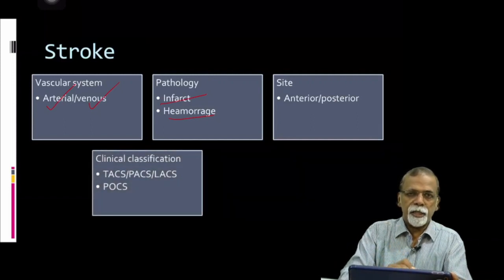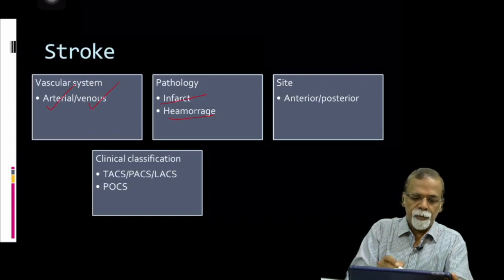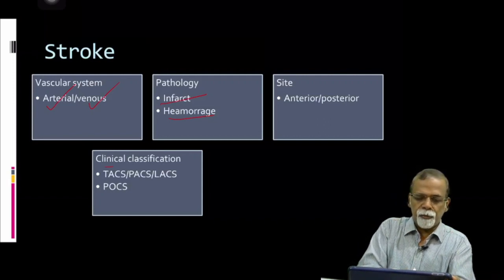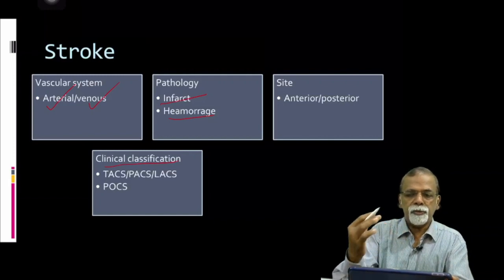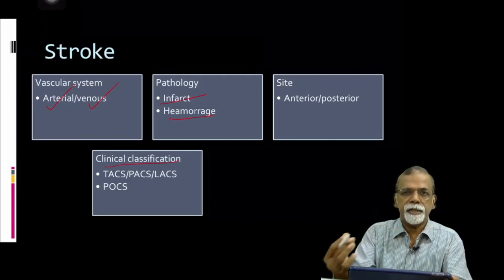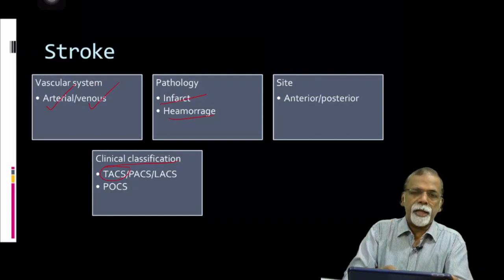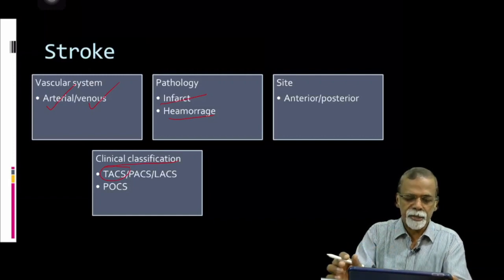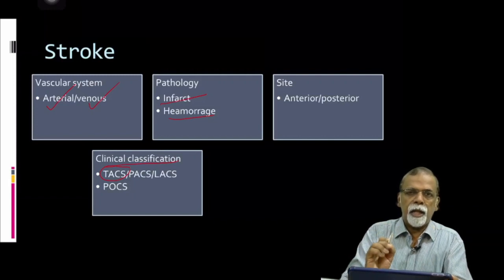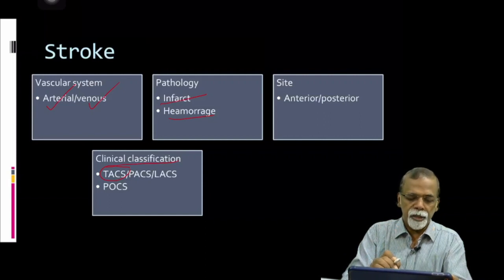Even though we consider vascular territory and pathology and site, clinically we classify stroke depending upon the amount of vascular territory that is affected. This is purely a clinical classification — even without imaging you can classify. There is total anterior circulation stroke, otherwise called TACS; partial anterior circulation stroke, otherwise called PACS; lacunar syndromes; and POCS or posterior circulation stroke.